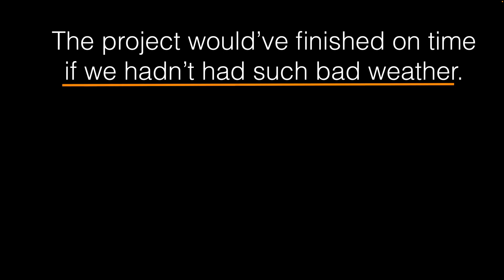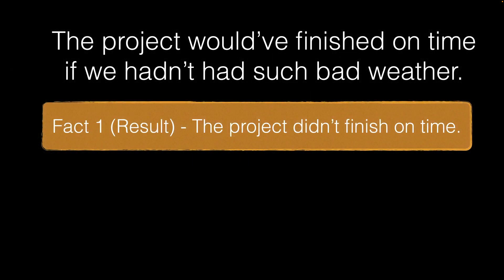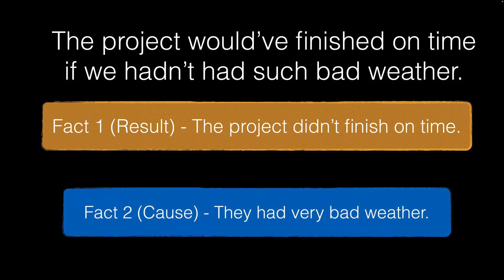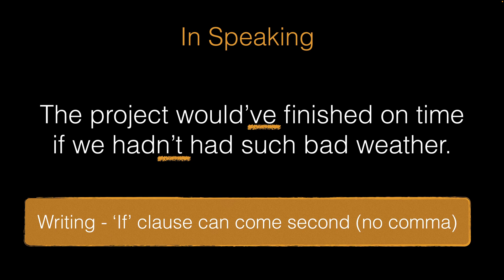Let's look at one more example where we've put the if clause second — the result comes first and the reason or cause second: 'The project would have finished on time if we hadn't had such bad weather.' In fact, the project didn't finish on time; they had very bad weather. 'Hadn't' is negative, so it needs to be stressed. For writing, when the if clause comes second there's no comma — if clause first needs a comma, but if clause second, no comma.